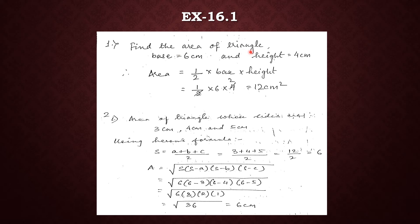Let us look into the first sum of Exercise 16.1. The question asks us to find out the area of a triangle with base 6 centimetres and height 4 centimetres. We know the formula is half into base into height, so applying the formula gives us 12 centimetres squared as the answer.